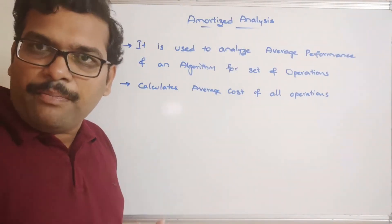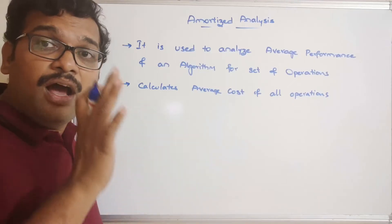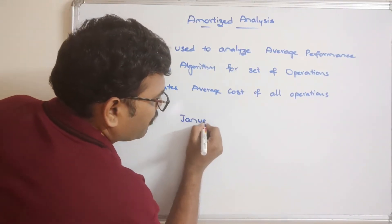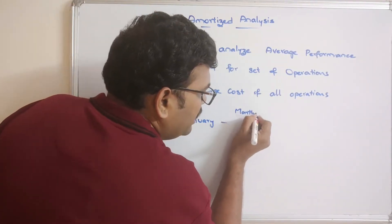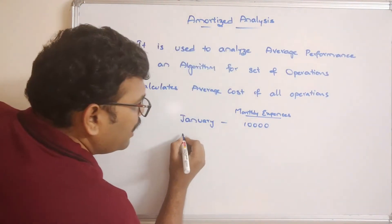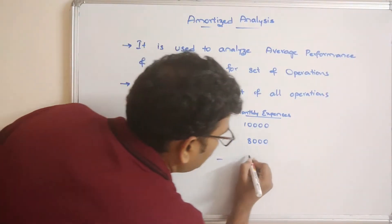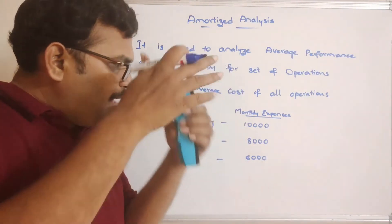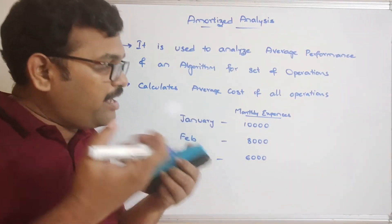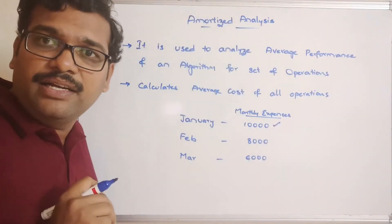Let's take an example of a person running a family. He needs a certain monthly expenses amount to run a family. In January the monthly expenses are 10,000 rupees, in February 8,000 rupees, and in March 6,000 rupees. According to these figures, what amount does a man need on average? Obviously we might say 10,000 — the worst case.